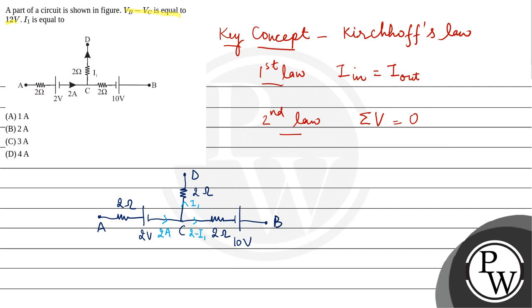In the question, it is given that VB minus VC is 12 volts. Now, apply the second rule in this branch. VB minus VC is equal to 10 minus 2 times (2 minus I1).